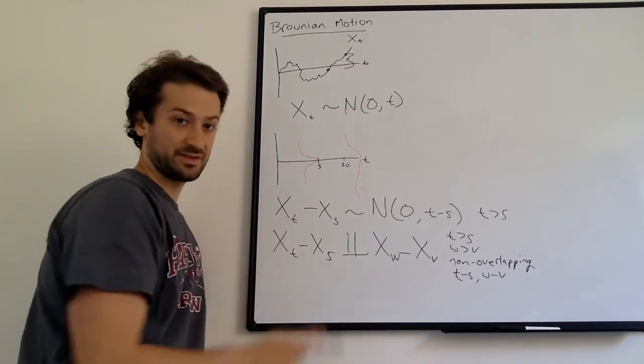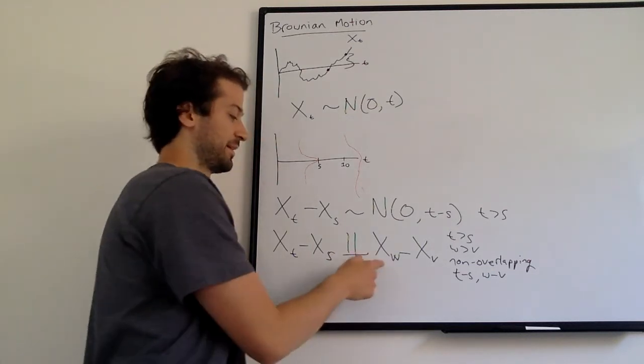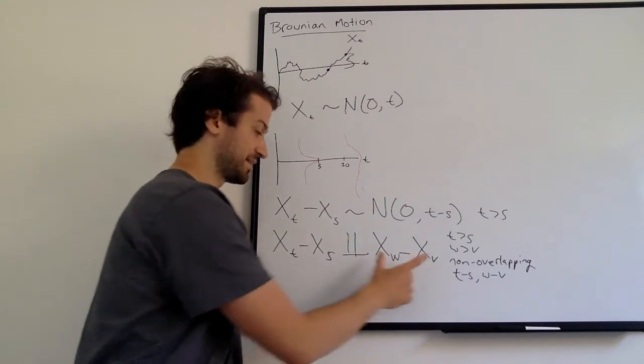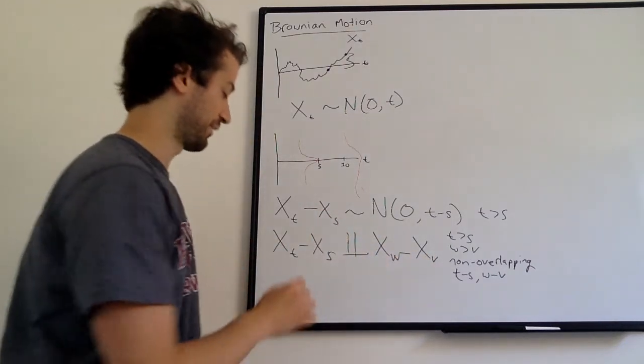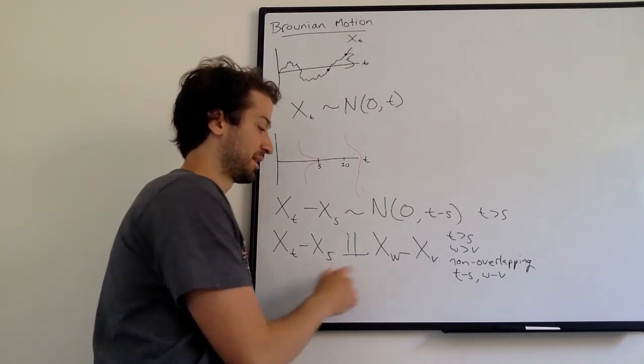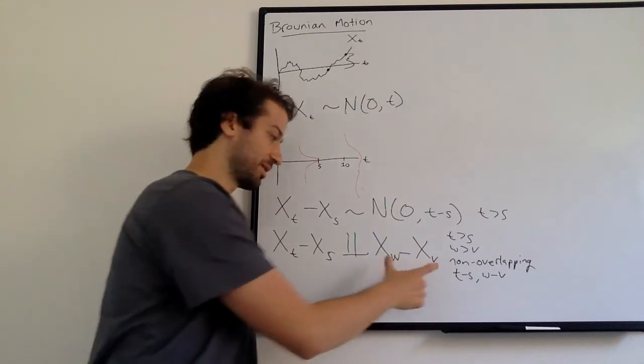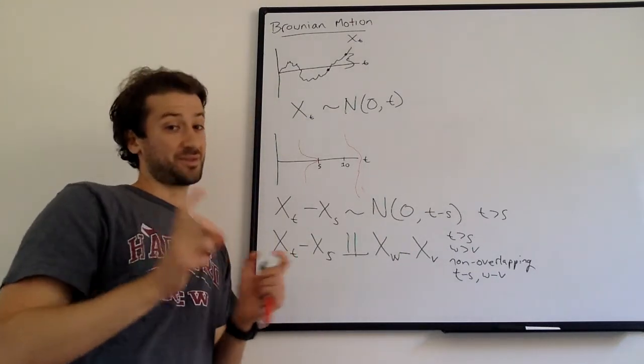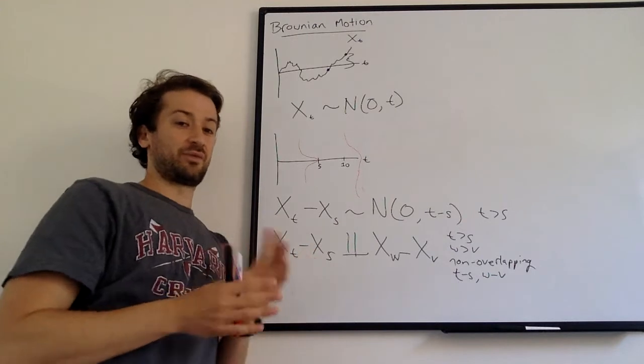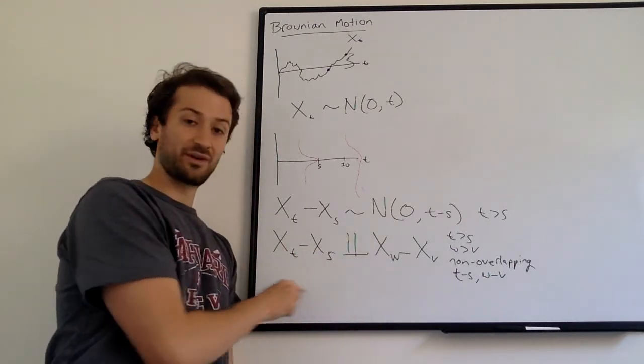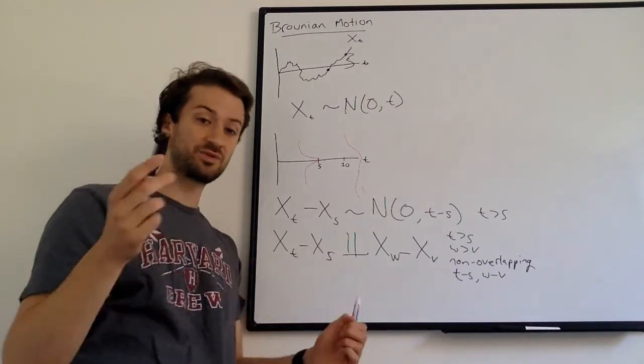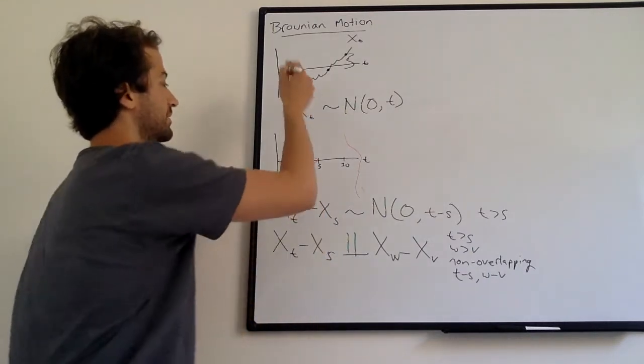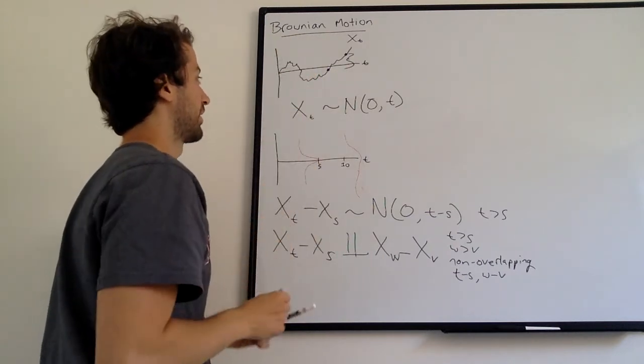And what that means is non-overlapping basically means that if t is 5 and s is 3, so this is x sub 5 minus x sub 3, w could be 10 and v could be 7. So we have 5 and 3 and 10 and 7. Those are non-overlapping, right? Whereas if we have like 8 and 2 and 11 and 4, they're overlapping, right? 8 to 2, 11 to 4, they overlap from 4 to 8. So basically it makes sense if they're overlapping that they're dependent because if we observe part of the interval, like if the difference that x sub t minus x sub s is huge, we have information that x sub w minus x sub v is also huge. But this is saying like two non-overlapping intervals, which I can draw here, are going to be independent.